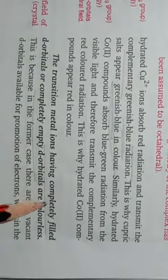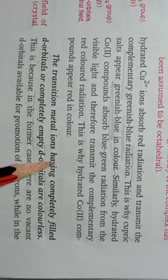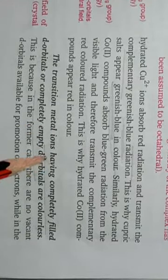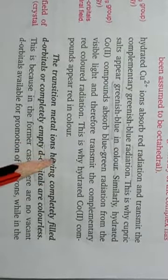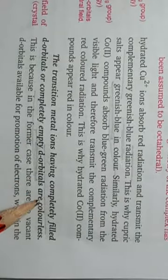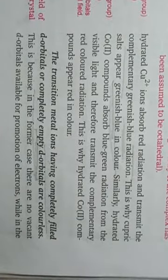A very important point: transition metal ions having completely filled d orbitals or completely empty d orbitals are colorless. With completely filled d orbitals, there is no possibility of d-d transition of electrons from one orbital to another. And if d orbitals are completely empty, due to the absence of any electron, there will be no transition of electrons from d to d orbitals.